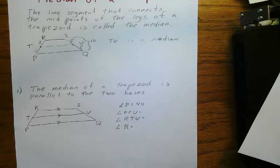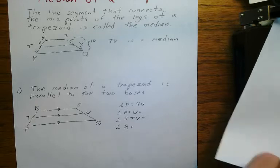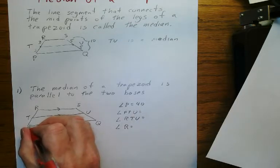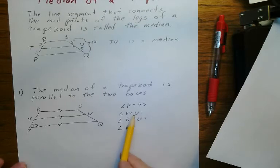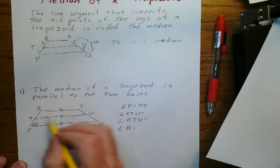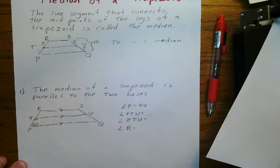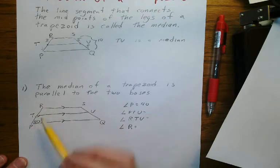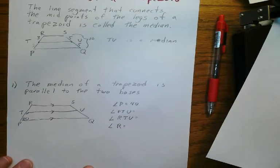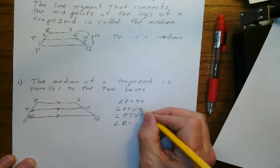Now we're going to use the properties of parallel lines to do this question. Angle P is 40 degrees. What is angle PTU? PTU is that angle right there. PTU and 40 — if you remember properties of parallel lines, you can think of this as the transversal. These are alternate interior angles, so they're going to be supplementary. What is 180 minus 40? PTU is 140.